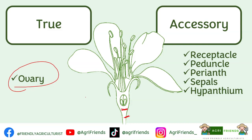The peduncle for the cashew, the perianth or the combination of petals and sepals for the four o'clock family, the sepals for the rose apples, and the hypantium for apples and pears. The hypantium is the cup-like enlargement of the receptacle of a flower that surrounds the ovary. If it is enlarged, we call this the hypantium.